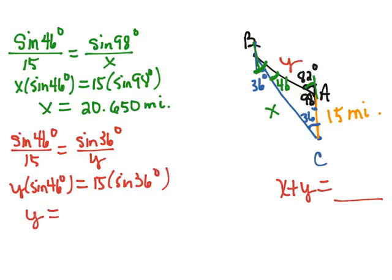So Y is going to be equal to 15 times the sine of 36 divided by the sine of 46, which is 12.257 miles.